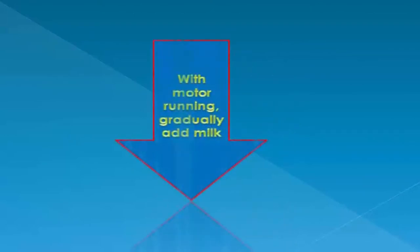With motor running, gradually add milk through feeder tube, then butter. Process until silken. Can make up to two days ahead. Store in an airtight container, reheat and serve.